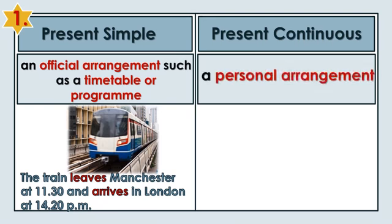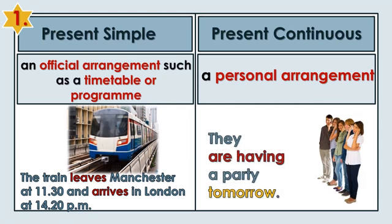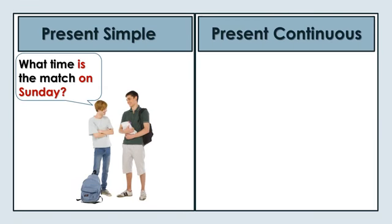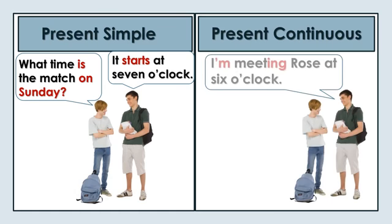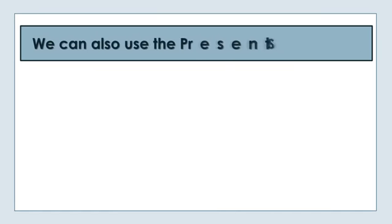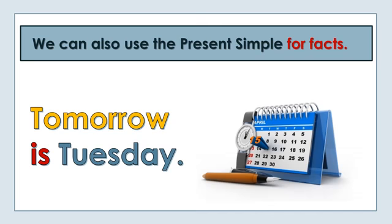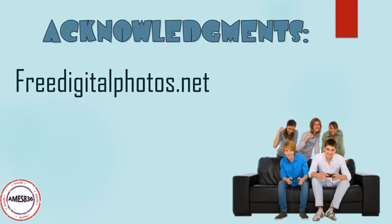The Present Continuous is used to say what we have already arranged to do - a personal arrangement. They are having a party tomorrow. What time is the match on Sunday? It starts at 7 o'clock. I'm meeting Rose at 6 o'clock. We can also use the Present Simple for facts. Tomorrow is Tuesday.